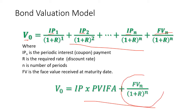The present value of face value can be obtained by dividing the face value as a future value by (1 plus the required rate of return) raised to the power n, since we will receive the face value at maturity date — only one time.